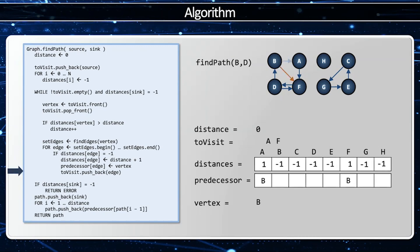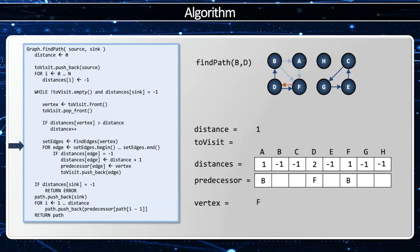Now that I've found every possible node from B, I'm going to pop A off the front, and now A is my vertex I'm considering, and I'm going to increment my distance by one. So now everything from A is one plus one, and notice how the only node that A is connected to is F, and F we already know the distance to, so I skip that one. And now I'm going to pop F off the front — now F is the node I'm going to consider — and F has only one node that it refers to, which is going to be my D node. The distance to D is two, which is my current distance plus one, and my predecessor is F, and I'm going to add D onto my two-visit queue. Now I know the distance to my destination, so I can stop. I start with D, then F, and then B, and so my path is B, F, D — and that's my shortest distance from B to D.